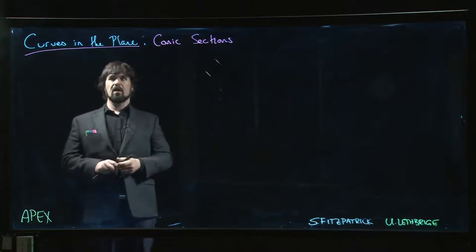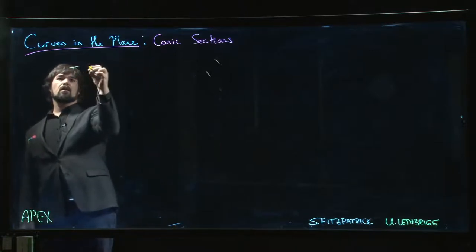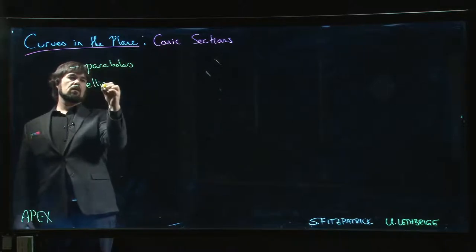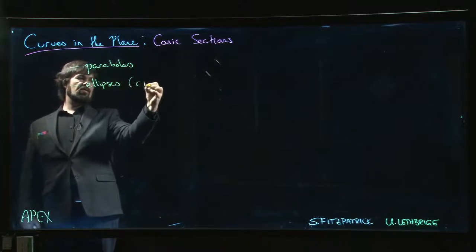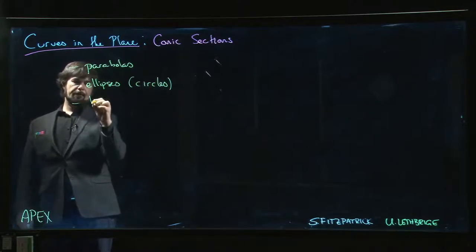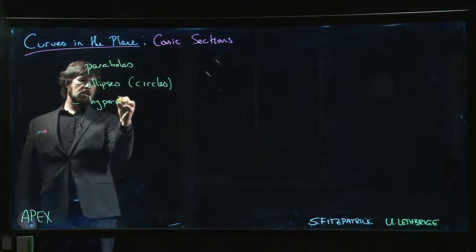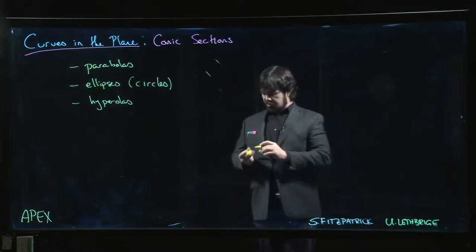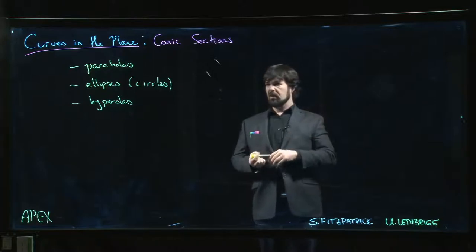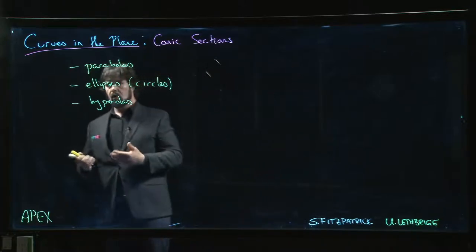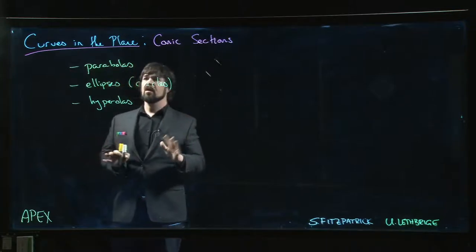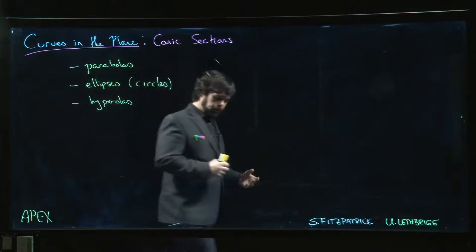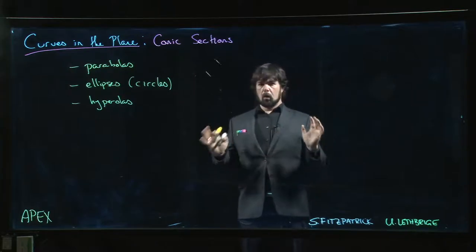So the conic sections include parabolas, ellipses (and the special case of the ellipse is a circle), and hyperbolas, along with a number of degenerate cases - things like a single point or a line or a pair of lines. These are the three primary types of conic sections that one would study. All of these are quadratic curves in the plane.